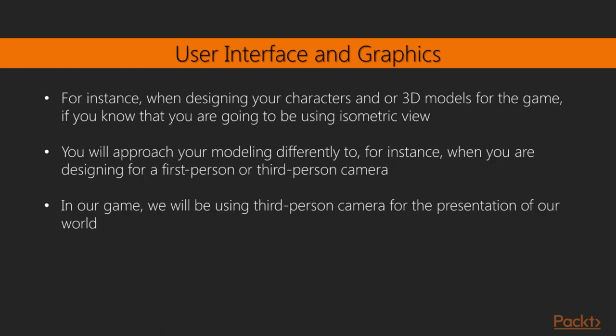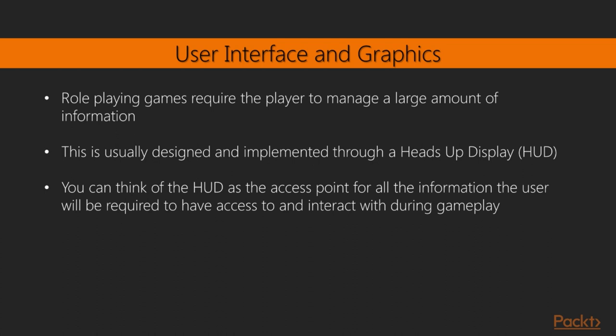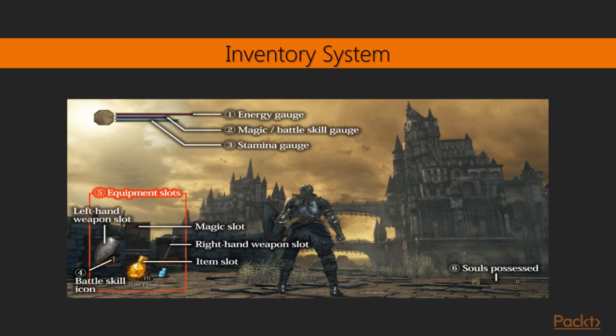User Interface and Graphics: When designing your characters and 3D models for the game, if you know that you are going to be using isometric view, then you will approach your modelling differently than when designing for a first-person or third-person camera. In our game, we will be using third-person camera for the presentation of our world. Role-playing games require the player to manage a large amount of information, and frequently make use of windowed interfaces to arrange the data for the player — usually implemented through a heads-up display (HUD).